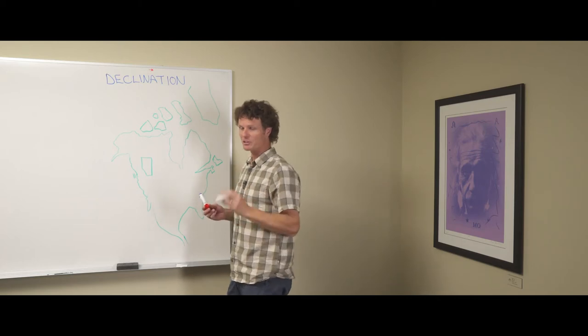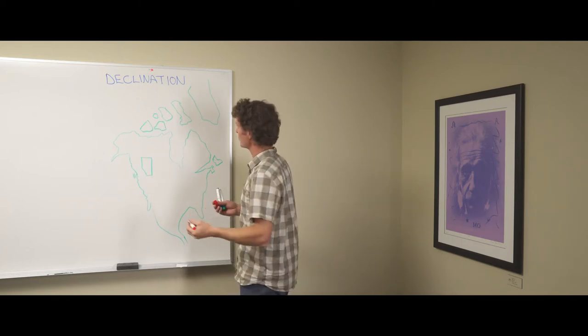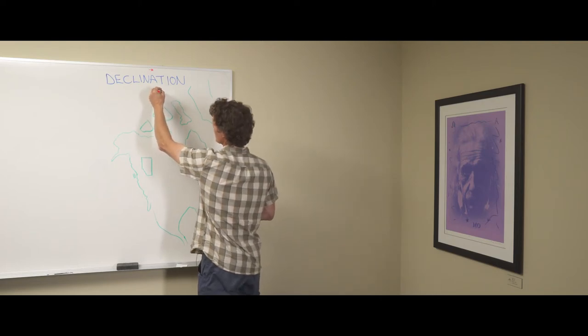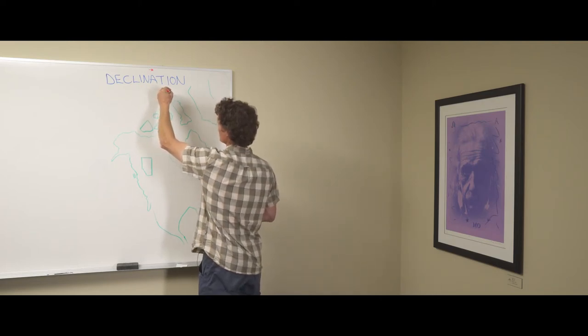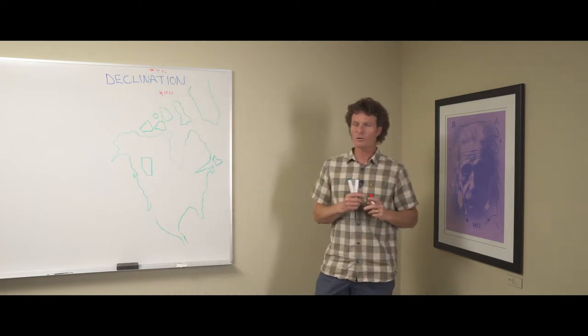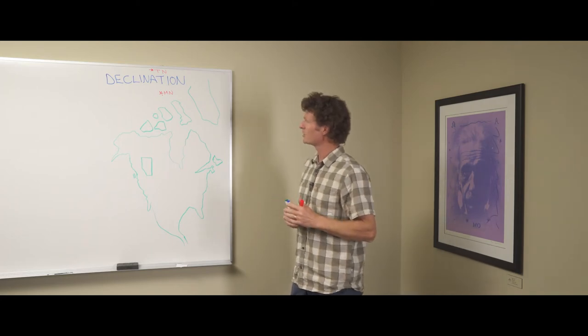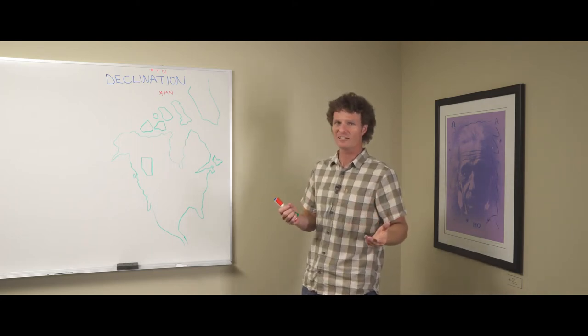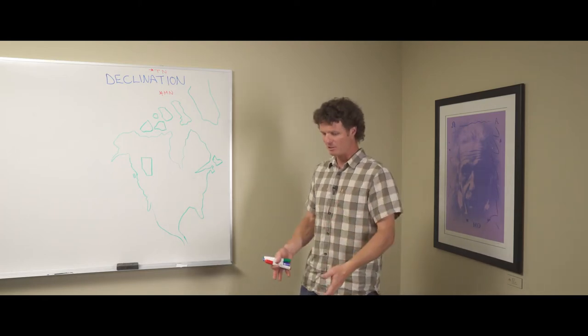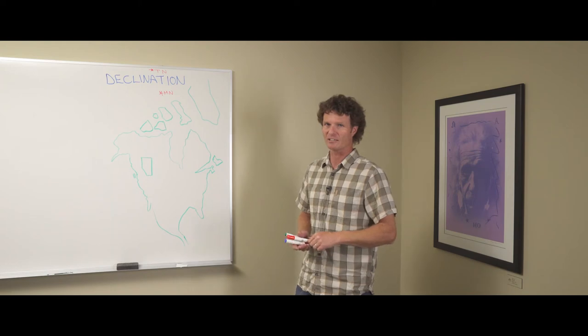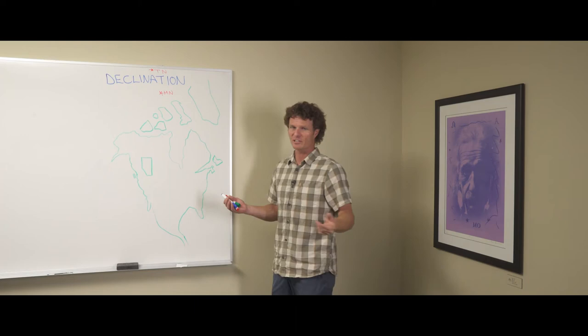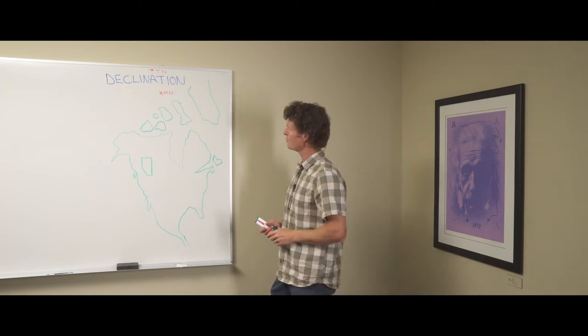There's also magnetic north, which is the north that compasses point towards. It is somewhere up in this area. So we'll call this magnetic north. We'll call this true north up here. Magnetic north is essentially a moving target. It moves over time because it's something to do with the molten material beneath the crust of the earth. So it moves and creates this over time moving target.